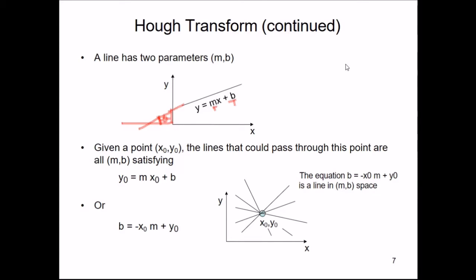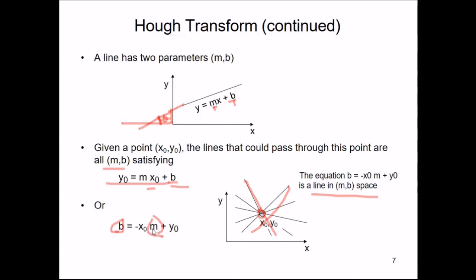We want to fit a line to a curve. Given a point (x₀, y₀), the lines that could pass through this point are all m and b satisfying y₀ = mx₀ + b. Any line passing through (x₀, y₀) will satisfy this equation with m and b remaining constant. Hough transform says: let us take this to parametric space, rearranging to b = -x₀·m + y₀. Now b and m become the variables, while x₀ and y₀ act as constants.